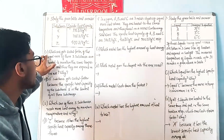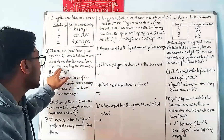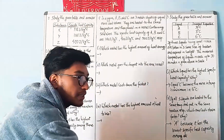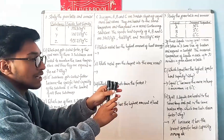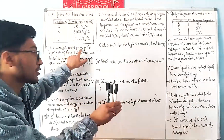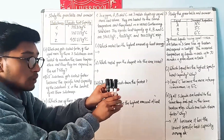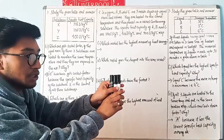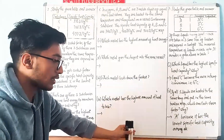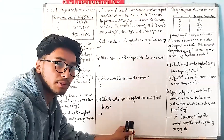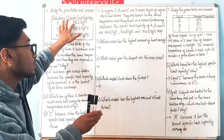Now we have question number one: which one gets cool faster if equal masses of these three substances are heated to the same temperature and then exposed to air? We have three substances with equal masses. We need to determine which one cools down fastest.